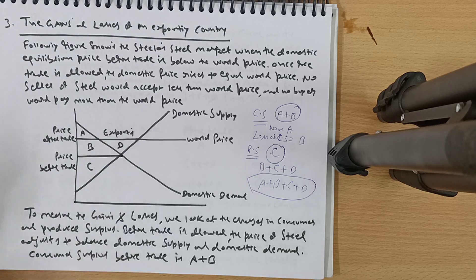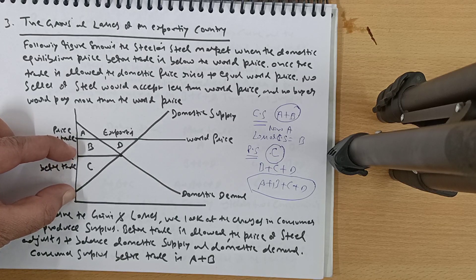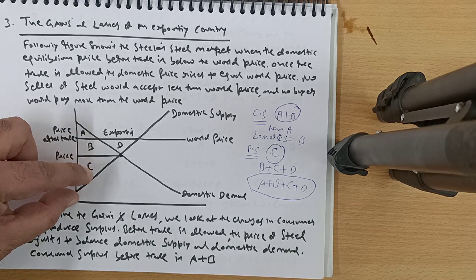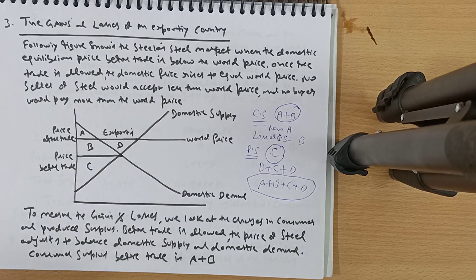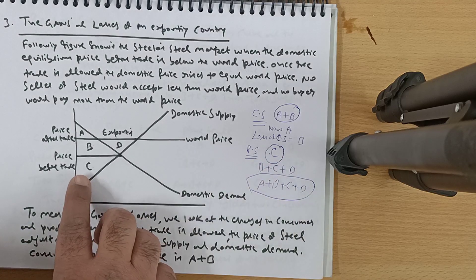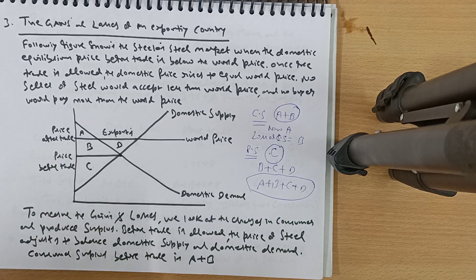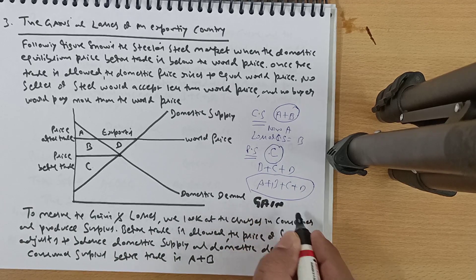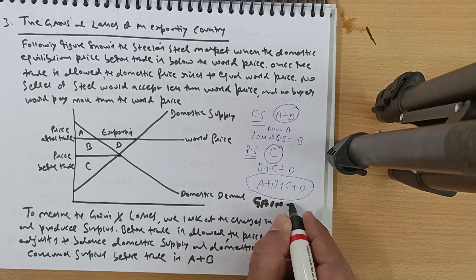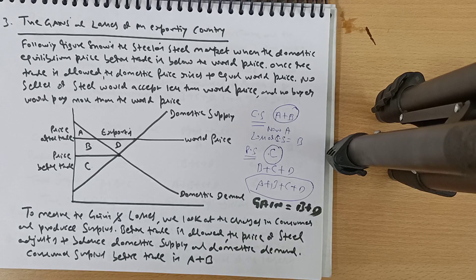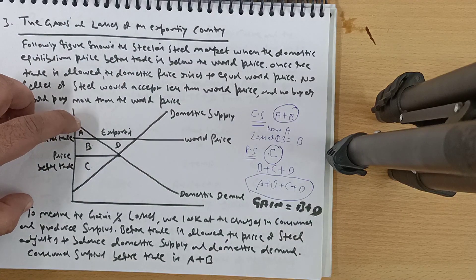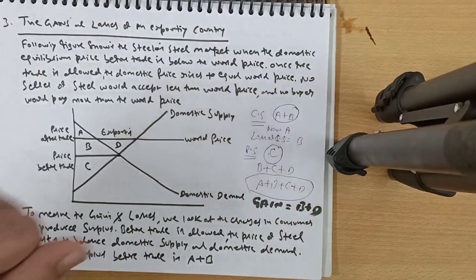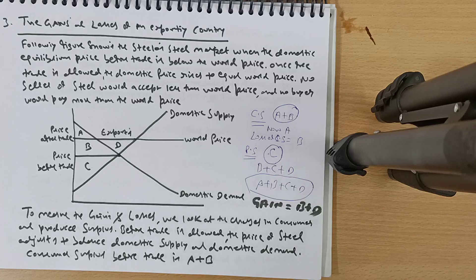Consumer surplus is the area below the demand curve and above the price. Producer surplus: before trade, the price was lower and producer surplus was area C. But when price rises, producer surplus becomes C plus B plus D. So the gain in producer surplus is B plus D. Total surplus before trade was A plus B plus C; after trade it becomes A plus B plus C plus D — an overall gain of D.